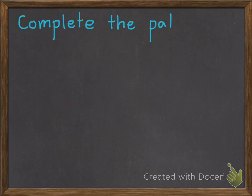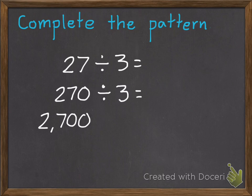So now that we've gone over that, here's my first example. I need to complete the pattern. So I have 27 divided by 3, 270 divided by 3, and 2,700 divided by 3.